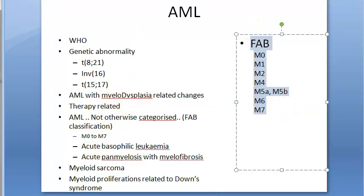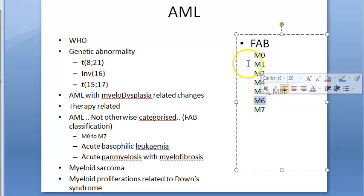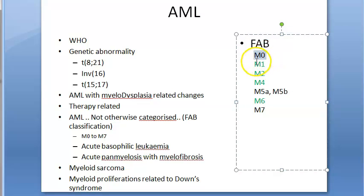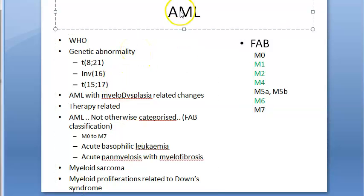M1, M2, M4, and M6 are myeloperoxidase positive. The subtypes are: M0 — minimally differentiated AML; M1 — AML without maturation; M2 — AML with maturation; M4 — acute myelomonocytic leukemia; M5A and M5B — monoblastic and monocytic leukemia. The myeloid progenitor gives rise to RBCs, WBCs (except lymphocytes), and platelets.